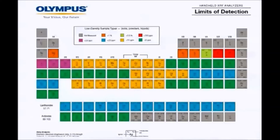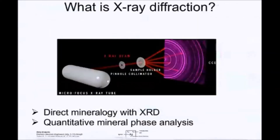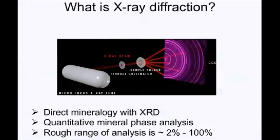Now we move to X-ray diffraction. X-ray diffraction is a direct mineralogy tool. It can offer qualitative mineral phase analysis, with a rough concentration range of 2% to 100%. While other techniques can calculate or derive mineralogy, XRD provides direct mineralogy — identifying and quantifying mineralogy directly from the crystal structure of your mineral.